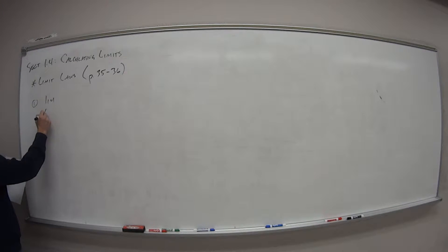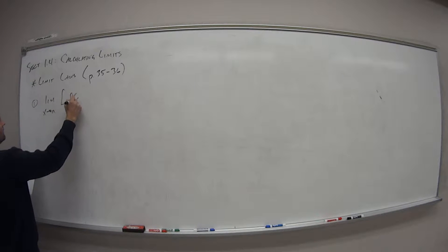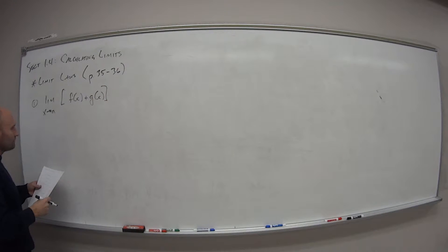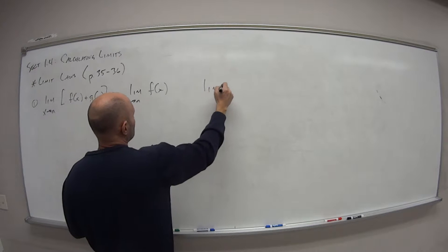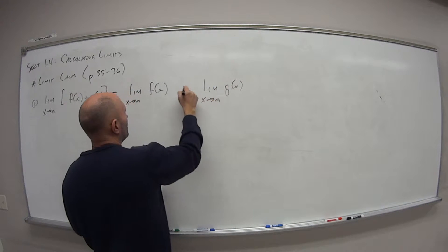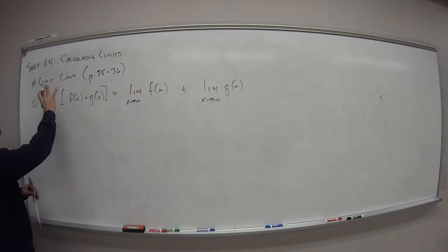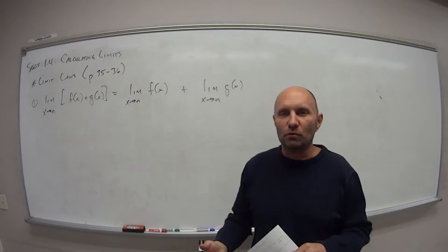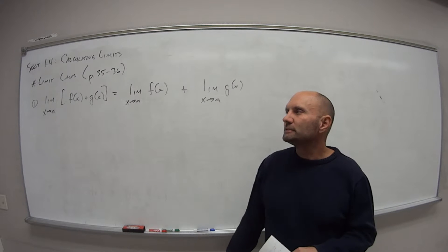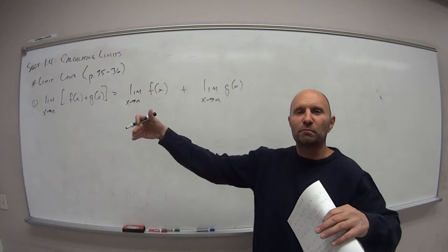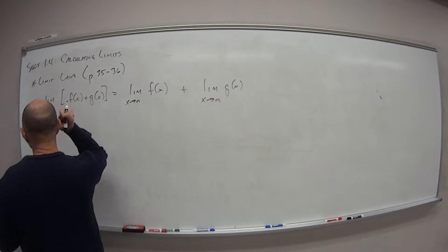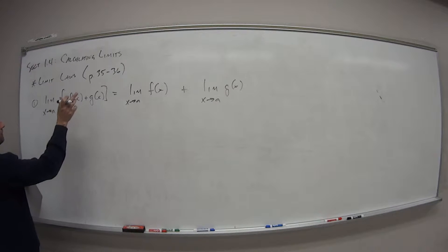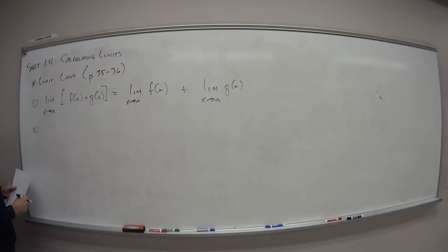First one we have is that the limit as x approaches a of the addition of two functions f and g—this is the same value as if we find the limit as x approaches a of each individual function and then just add them together. I don't want to say we're distributing, because the limit, we're finding a value. Just like if you have sine of x plus 9, you don't distribute the sine. We're not really distributing the limit here, even though it may seem like it, but it's just a property: we have two functions and we're trying to find the limit of the combination. We can just find each individual limit and then add them together. And that's how most of these are.